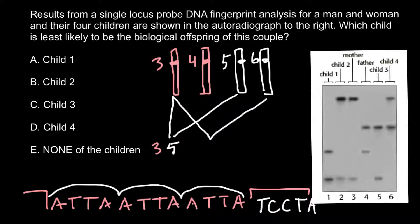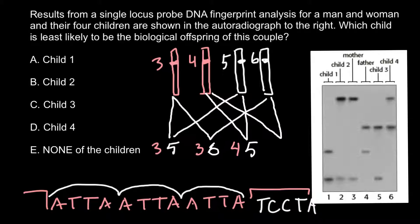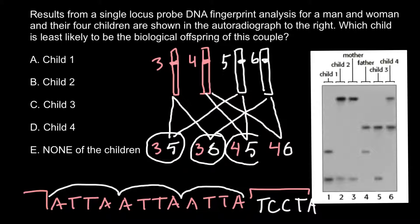Another variant: three from the mother's side and six from the father's side. Yet another: four from the mother's side and five from the father's side. And the last variant: four from the mother's side and six from the father's side. So, as you can see, in every combination one allele comes from the mother's side and the other comes from the father's side.